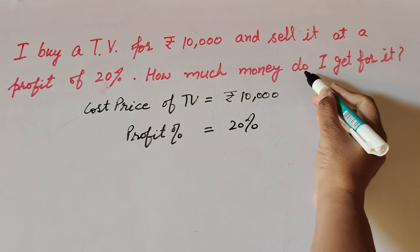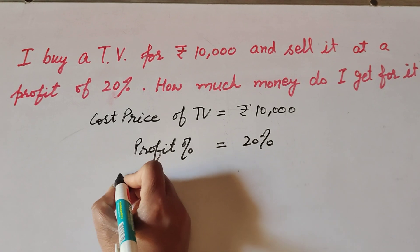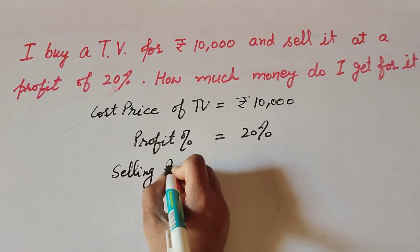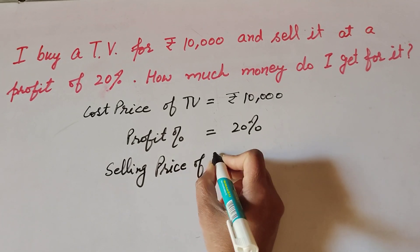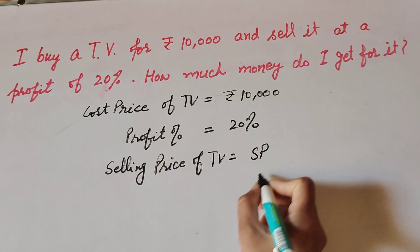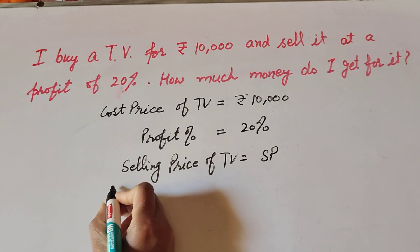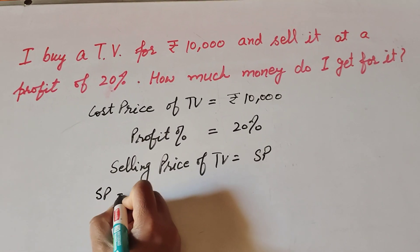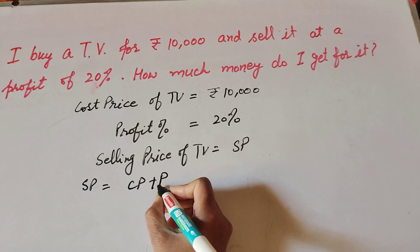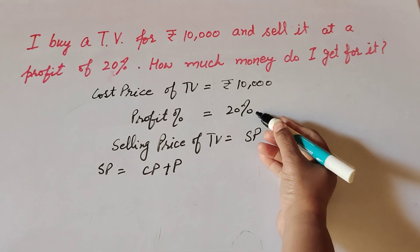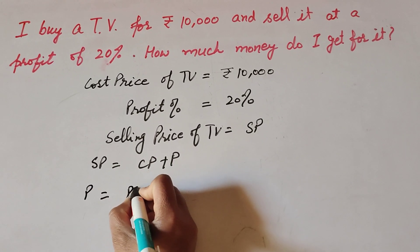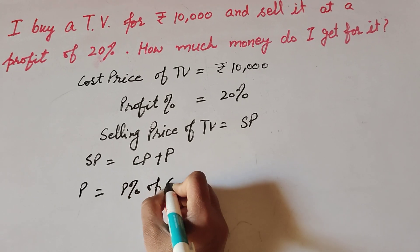We need to find the selling price of the TV. Selling price of TV, which we have to find, uses the formula: selling price is equal to cost price plus profit. We need the profit, but the given thing is profit percentage, so first we find the profit. Profit is equal to profit percentage of cost price.